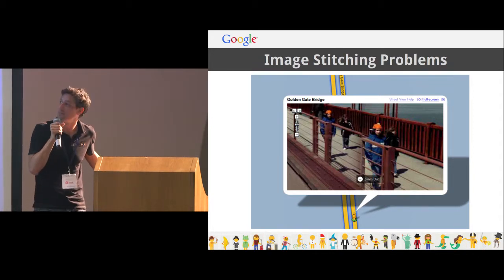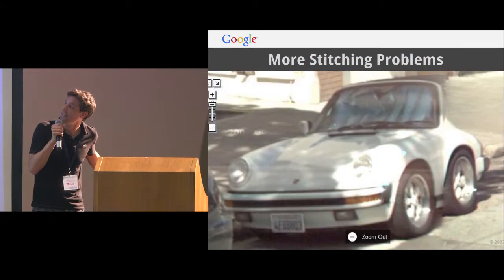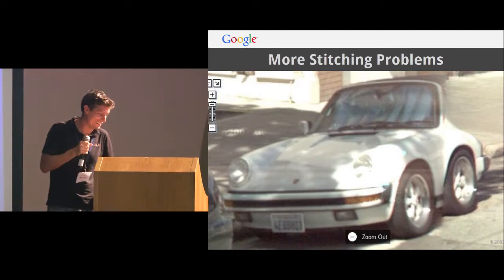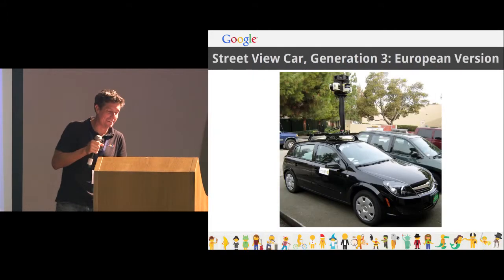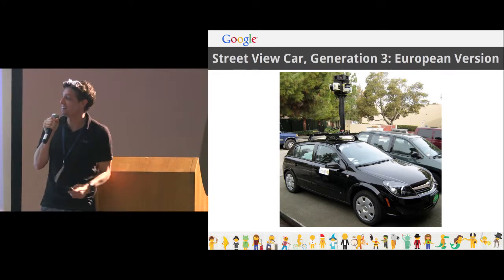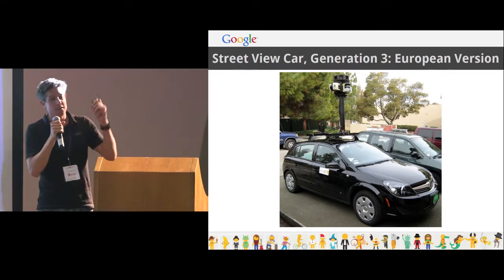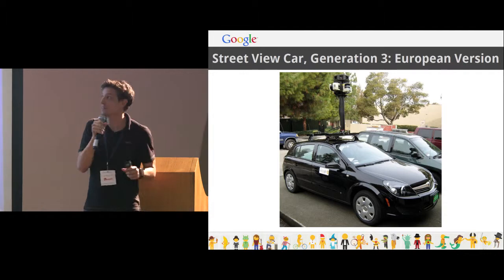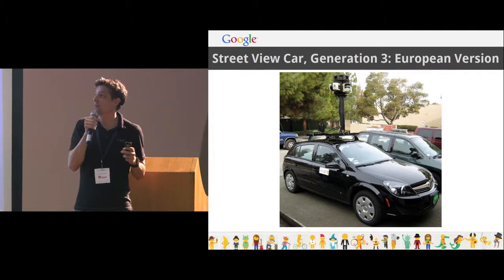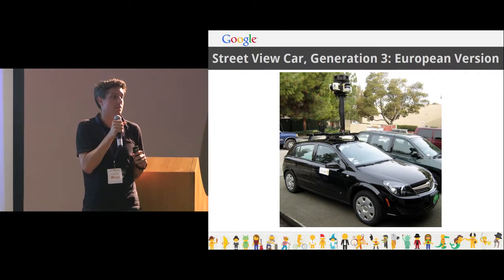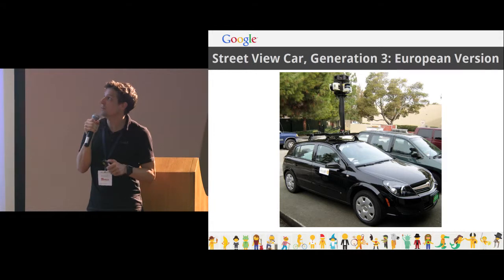We had image quality issues — sensors blown out by direct sunlight, it wasn't waterproof, stitching issues as a consequence of motion. Then we had someone who was paying us and growing like crazy, so we started actually building a really robust system.